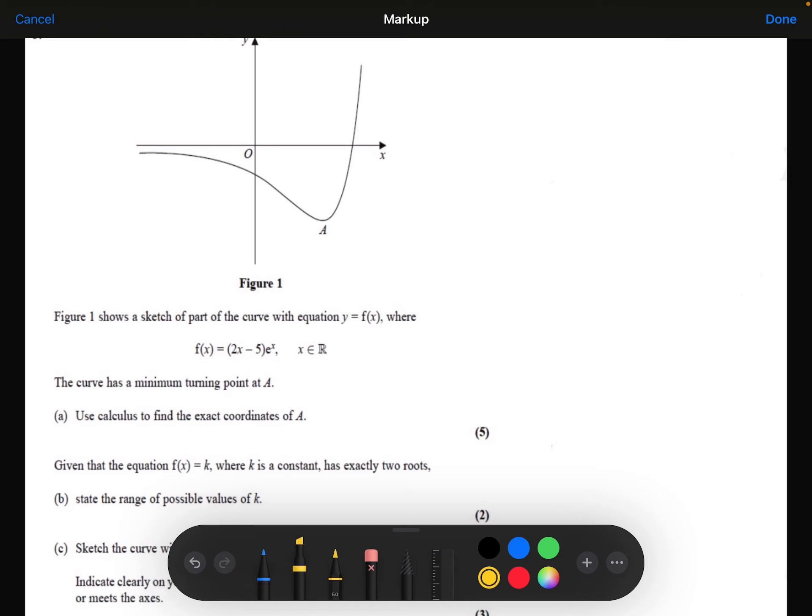In order for me to differentiate my function, notice the function is a product of two different functions. So I need to use the product rule. Let's let u be equal to 2x minus 5, and let's let v be equal to e to the power x.